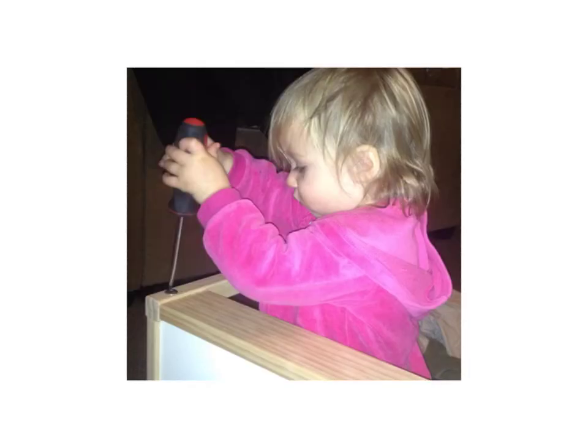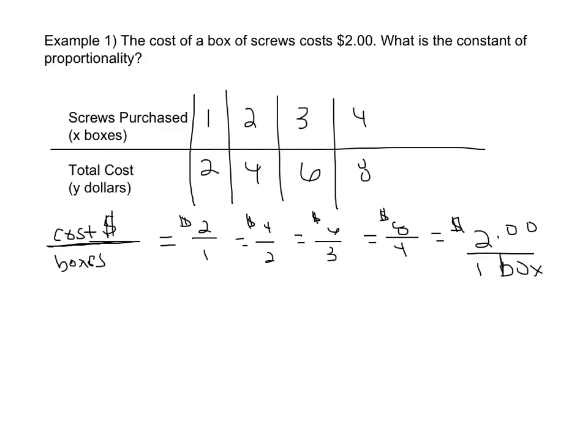Remember this. I'm going to guess that the definition of the constant of proportionality probably didn't help you a lot. So let's go back to one of the examples we showed in the last video, which was the cost of a box of screws cost $2.